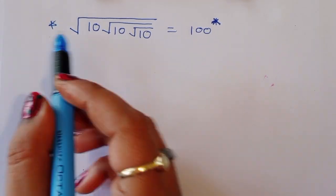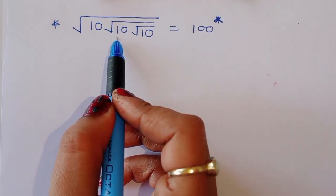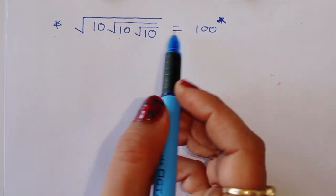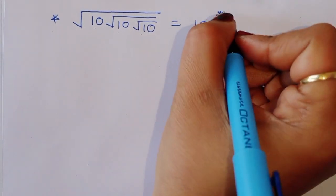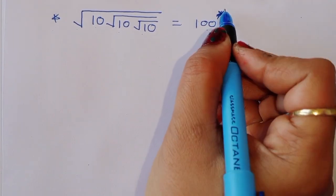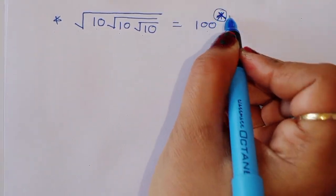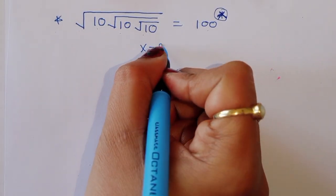The question is given: square root of 10, square root of 10, square root of 10 is equal to 100 raised to x. We have to find out the value of x.